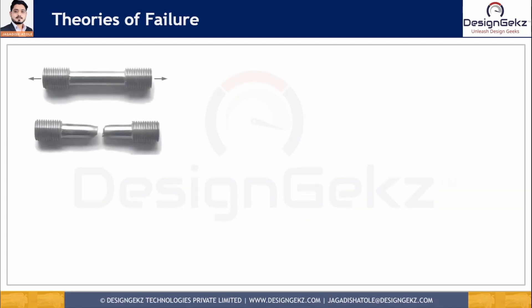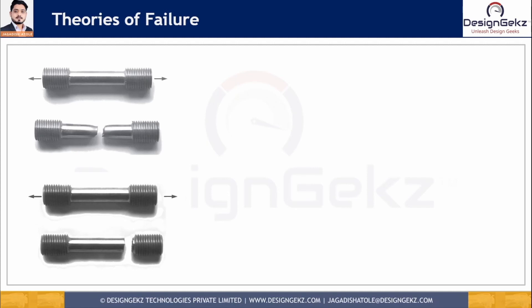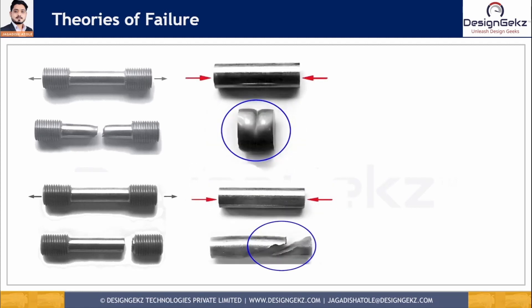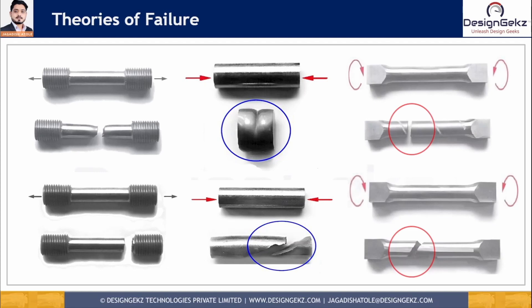In a tensile test specimen of ductile steel, failure occurs along the principal shear stress plane. For a brittle steel specimen, failure occurs along the principal normal stress plane. In compression testing, ductile steel gets deformed while brittle cast iron gets fractured. In torsion testing, both ductile steel and brittle cast iron specimens fracture, but along different planes.